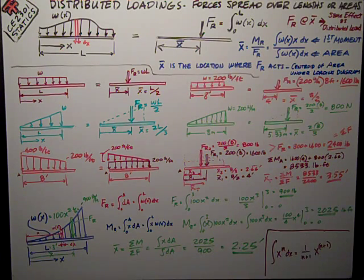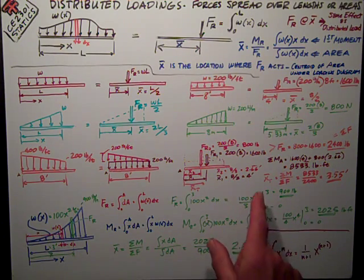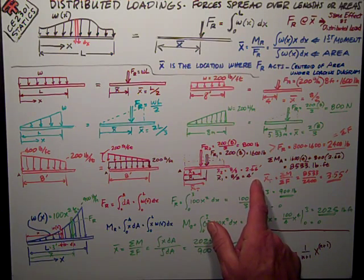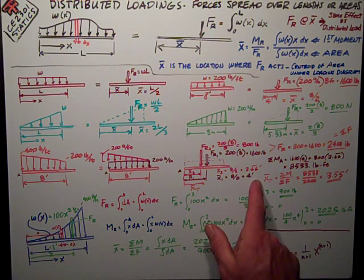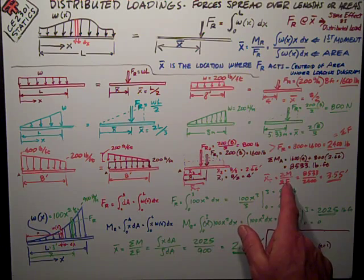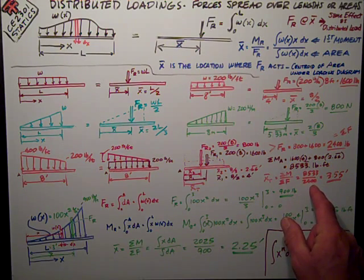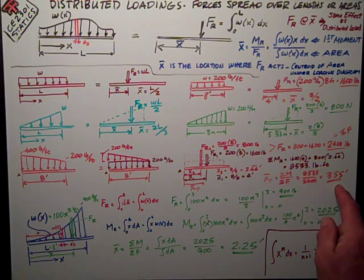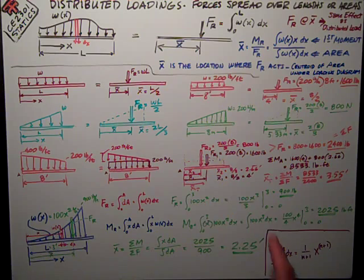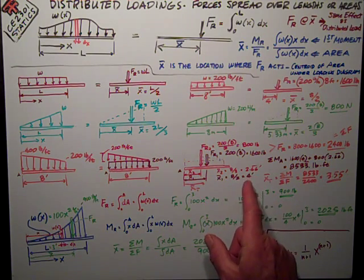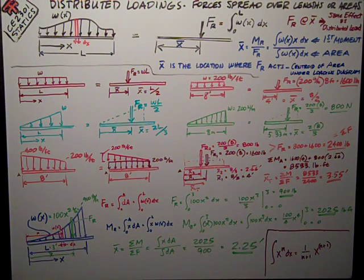Do the math, I get 8533 pound-feet. My real goal is to figure out what that x bar total, x bar t as I've called it, distance is. That's just the sum of the moments divided by the sum of the forces, 8533 divided by 2400 is 3.55 feet. Makes sense, it's right between the 4 feet and the 2.66 feet from this left end.